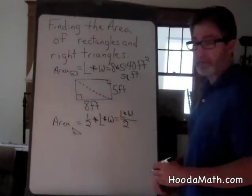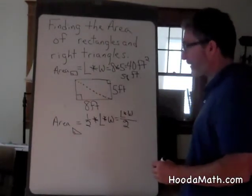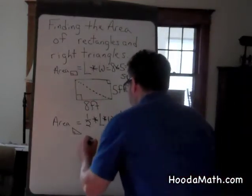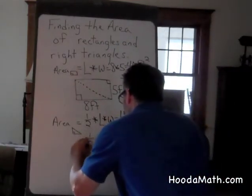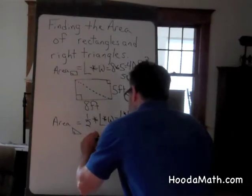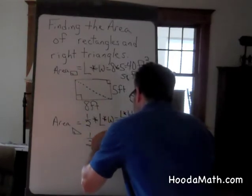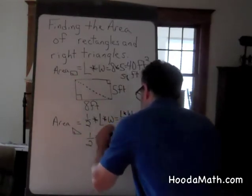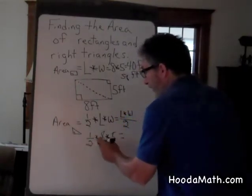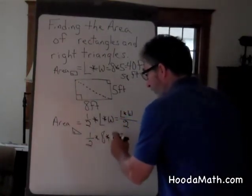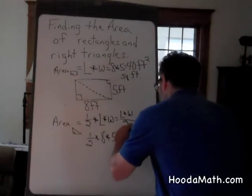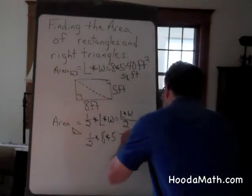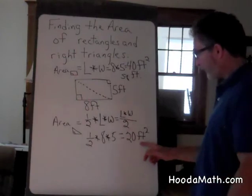By substituting the numbers for this, we get the length, which is 8, times the width, and we would get 1 half of 40, which is 20 square feet.